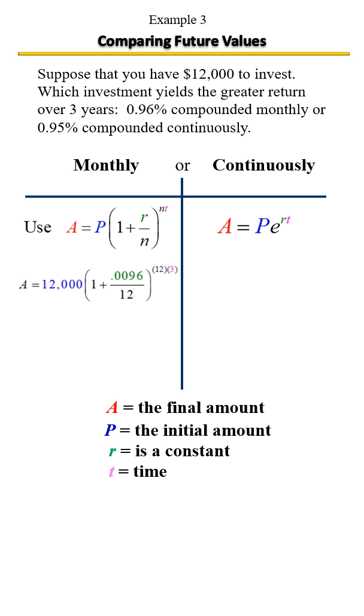Now we're going to get our calculator and calculate the accumulative value. So that's going to be 12,000 parentheses one plus 0.0096 divided by 12, close parentheses, raised to the 36 power and press enter. And this is the final value.